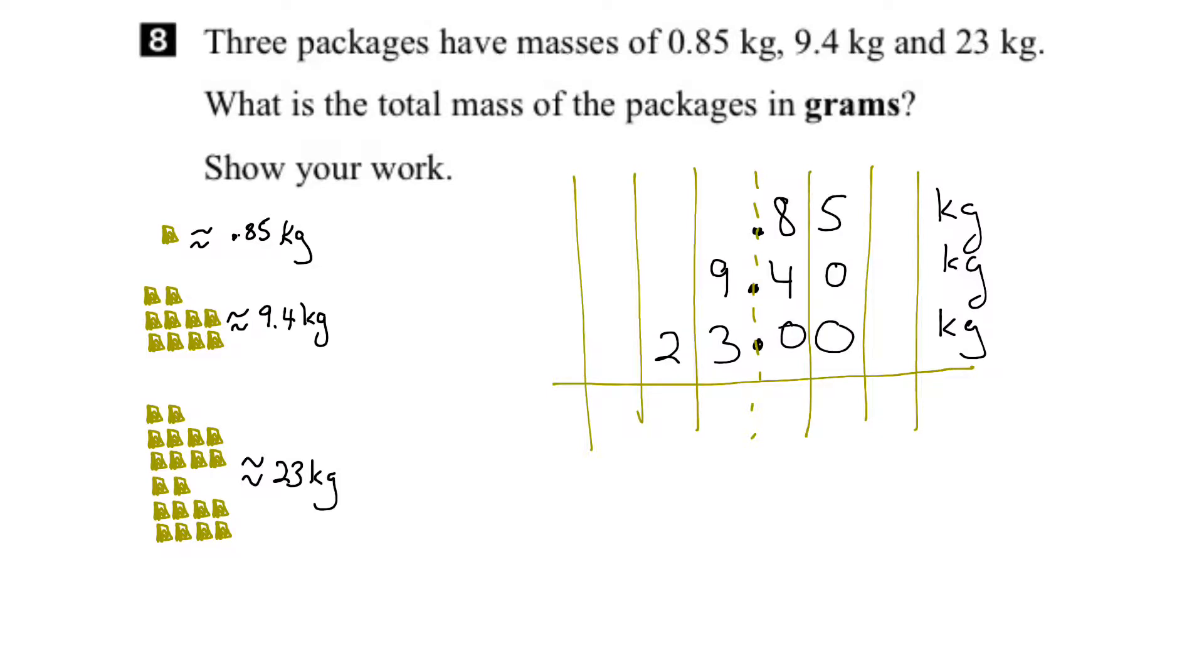So we start by adding up the farthest right column, so 5 plus 0 plus 0 gives us 5, and then we've got 8 plus 4 plus 0 is 8 plus 4 is 12, and then we carry over the 1. And then for the next column, 1 plus 9 is 10 plus 3 is 13, and we carry the 1 again, and then finally 1 plus 2 would be 3.